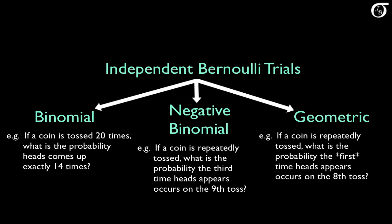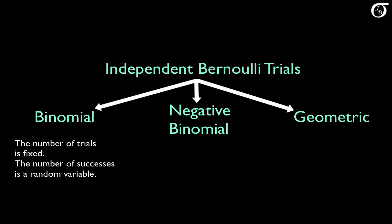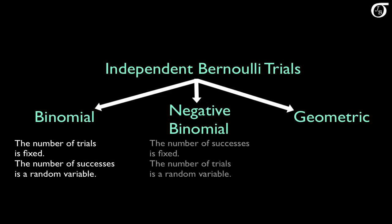The way the binomial distribution and the negative binomial distribution arise can sound similar, and they can sometimes be confused. They differ in what the random variable is. In the binomial distribution the number of trials is fixed, and the number of successes is a random variable — for instance, we're tossing a coin a fixed number of times and the number of heads is the random variable. In the negative binomial distribution the number of successes is fixed, and the number of trials required to get that number of successes is the random variable — for instance, we might be tossing a coin until we get heads four times, and the number of tosses required is the random variable.